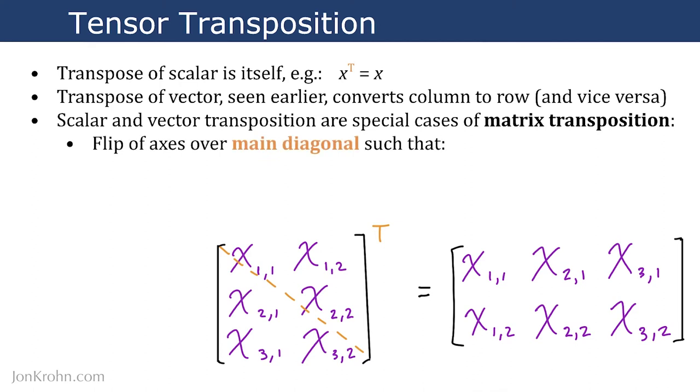So in a matrix transposition, we flip the axes of our matrix over the main diagonal. The main diagonal of the matrix runs from the top left corner to the bottom right corner of the matrix.